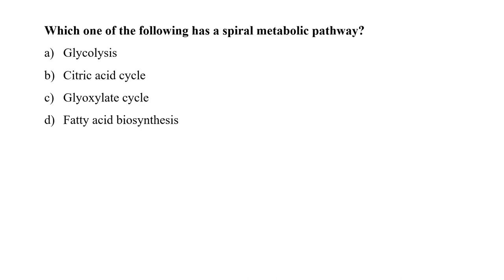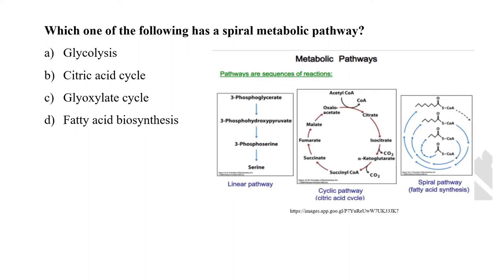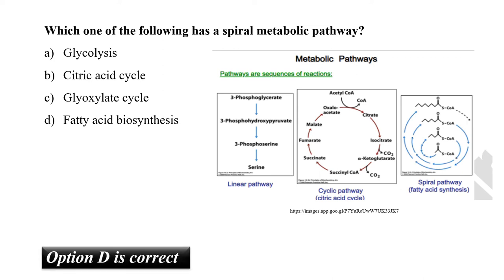The next question is: which one of the following has a spiral metabolic pathway? Metabolism involves generation of energy and synthesis of biological molecules. Metabolic pathways can follow several types: spiral, cyclic, and linear. As shown in the given picture, glycolysis follows a linear pathway, the citric acid cycle follows a cyclic pathway, and fatty acid biosynthesis follows a spiral pathway. A spiral pathway is similar to a cyclic pathway in that the same series of enzyme-catalyzed reactions is repeated many times, but differs in that the substrate is lengthened or shortened by a monomer unit each time through the spiral. So our correct option is D, that is fatty acid biosynthesis.